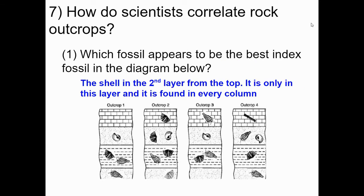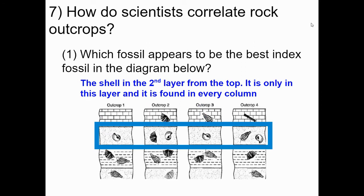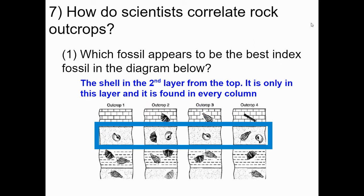So if you said the shell on the second layer from the top, you got it — this shell right here. Because it's found in all four outcrops, which means that it's widespread, but it's only found in one rock layer, which means it lived for a short time. And that's why it's a good index fossil.